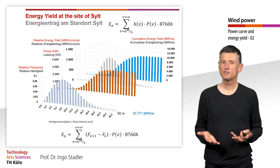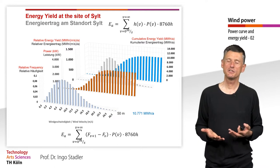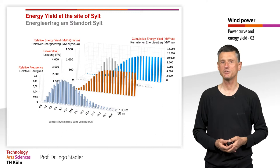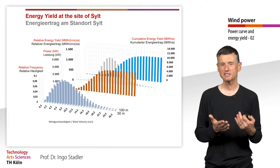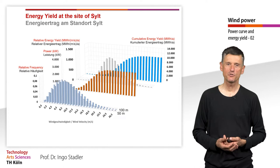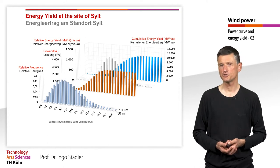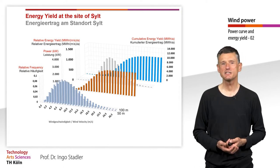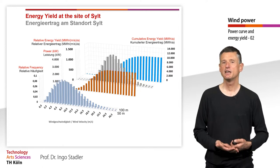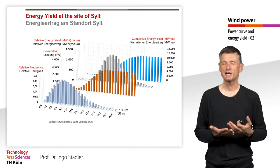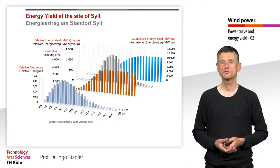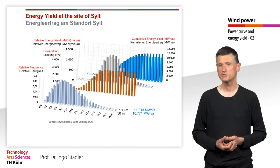Now for a second example: we double the hub height from 50 to 100 meters. This gives a slightly different wind distribution probability curve, which also results in a slightly different relative energy yield. The energy output is a bit higher — now close to 12,000 MWh per year.